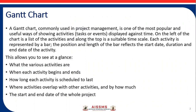Gantt chart is commonly used in project management. It's one of the most popular and useful ways of showing the activities, tasks, or events of a project, displayed against a suitable time scale along the top. Each activity is represented by a bar, so the Gantt chart is also called a bar graph. The position and length of the bar reflects the start date, duration, and end date of the activity.